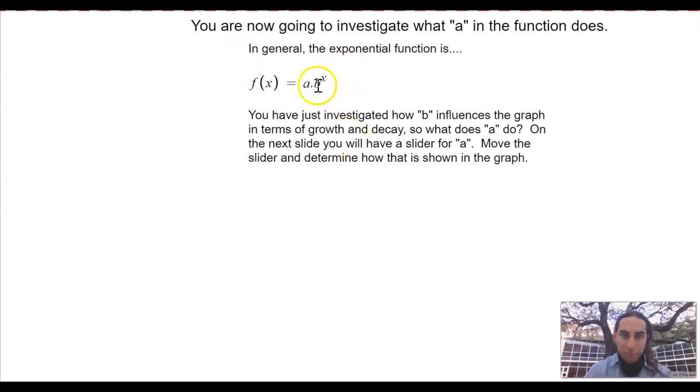Next. So we talked about this b value. Now let's talk about this a value. This is supposed to be a multiplication dot right here. So a times b to the x. What happens with a? So you have just investigated how b influences the graph in terms of growth and decay. So what does a do? On the next slide, you will have a slider for a slider and determine how that is shown in the graph.